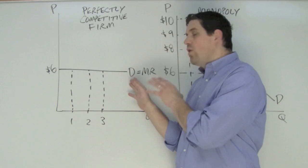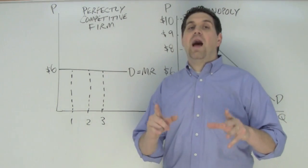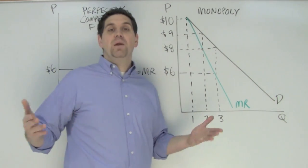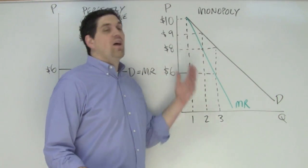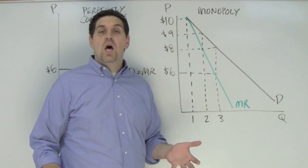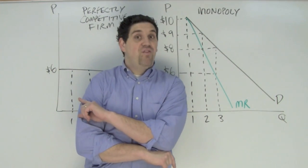So demand, or price, equals marginal revenue. These firms are price takers. That's not what's going on with a monopoly. A monopoly is a price maker - they can charge any price they want. They can charge $5 million if they want. No one's going to buy it, but they could. Or they can charge 5 cents. But the relationship between demand and marginal revenue is not going to be equal like it was before.